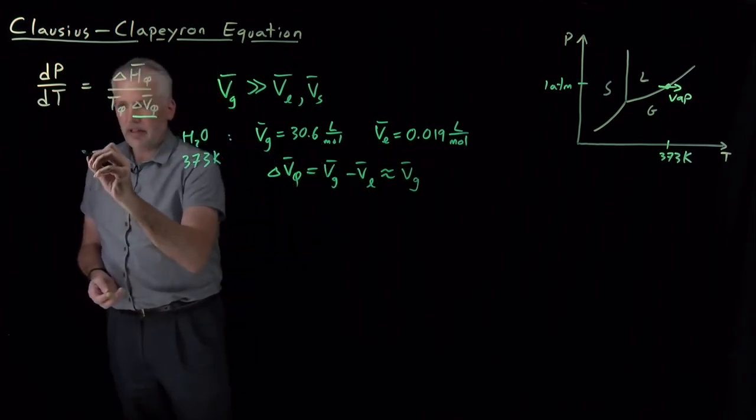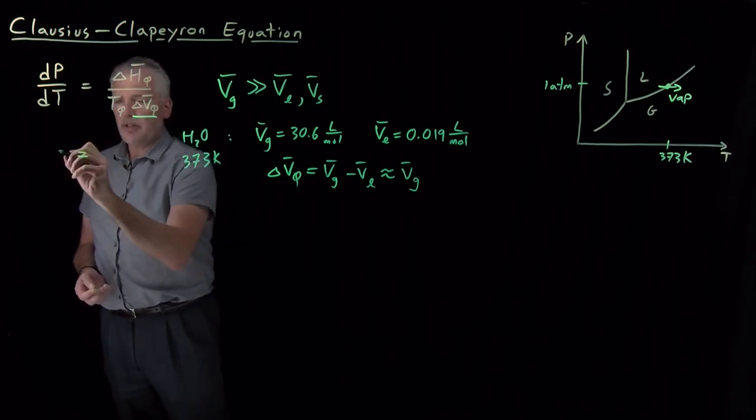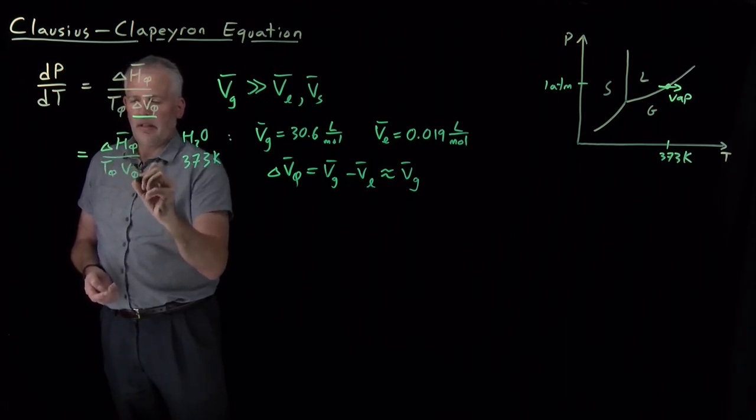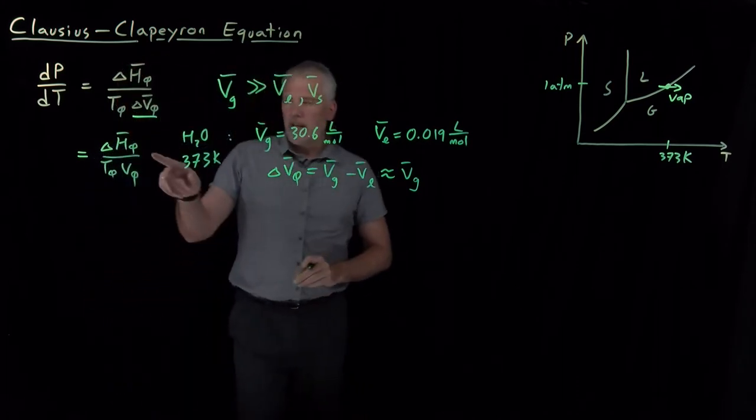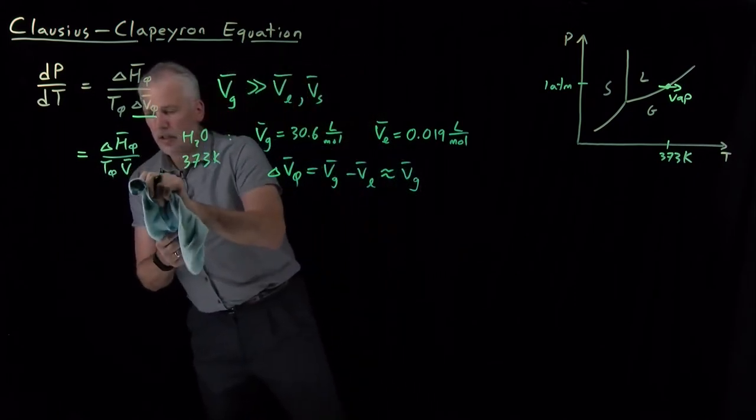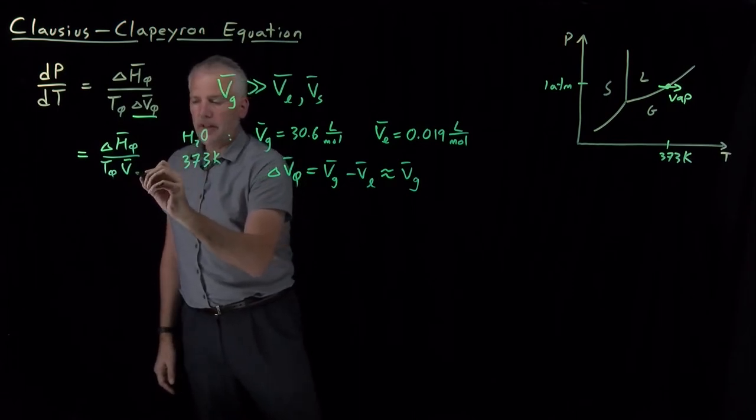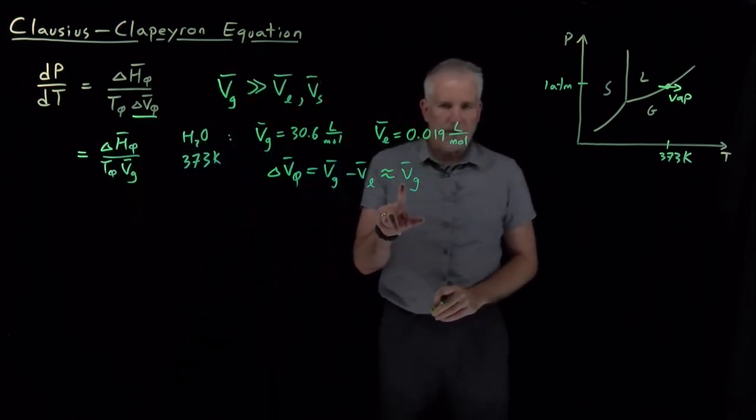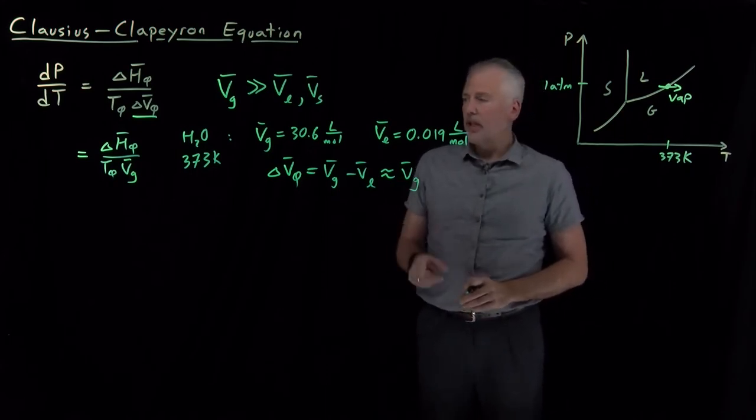So, what that means is we can rewrite the Clapeyron equation, writing, instead of writing the change in molar volume for the phase change, just write the molar volume of the gas, reflecting the fact that the liquid is negligible.